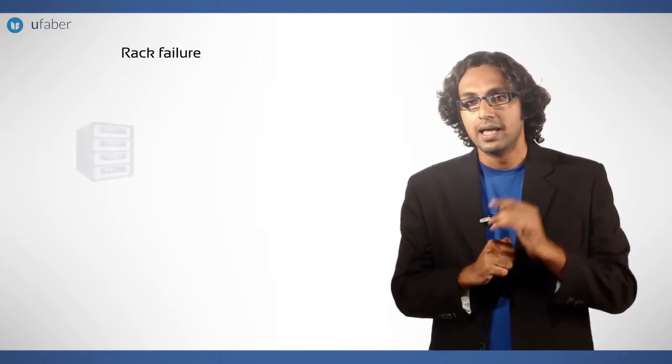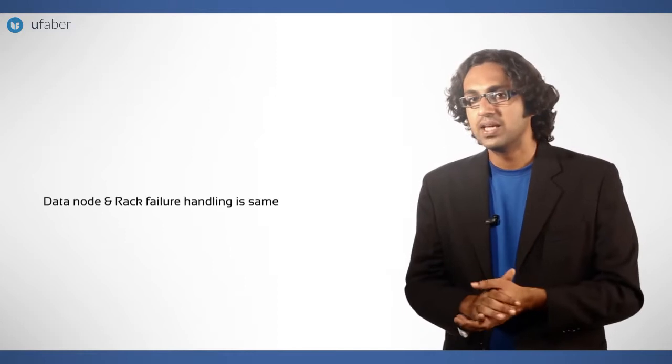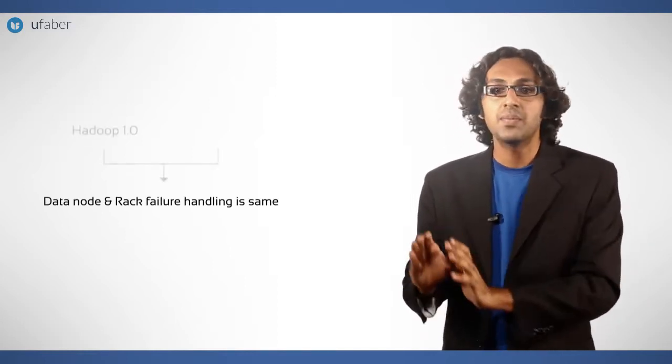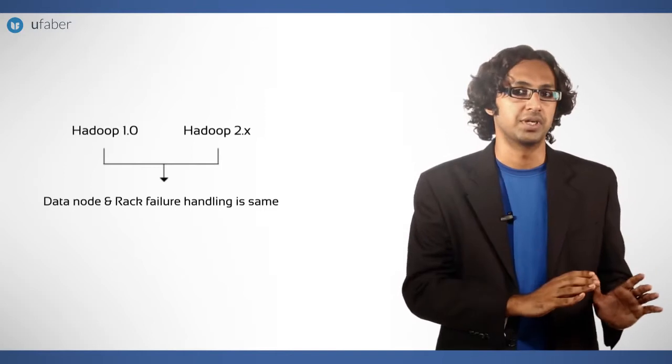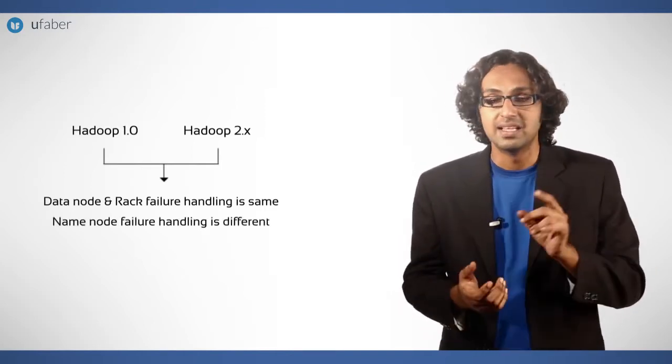In such a case, name node finds other data nodes with a replica. The data node failure and rack failure handling is same in Hadoop 1.0 and Hadoop 2.x. However, the name node failure handling is different.